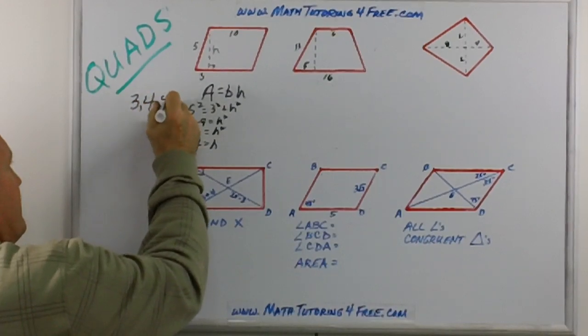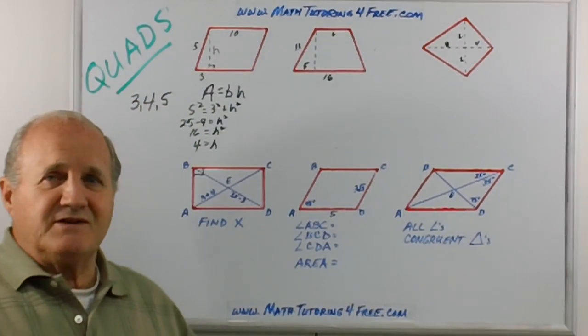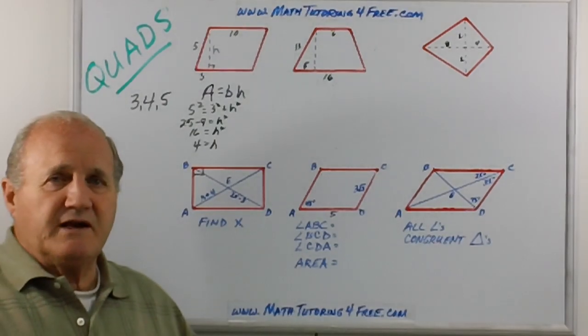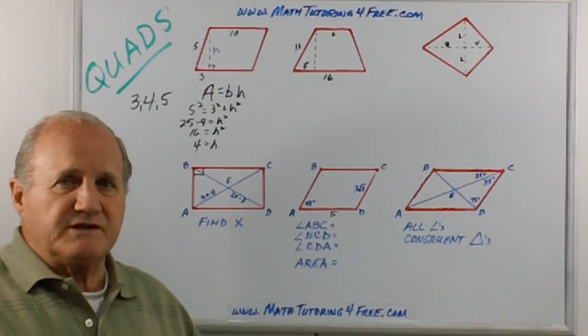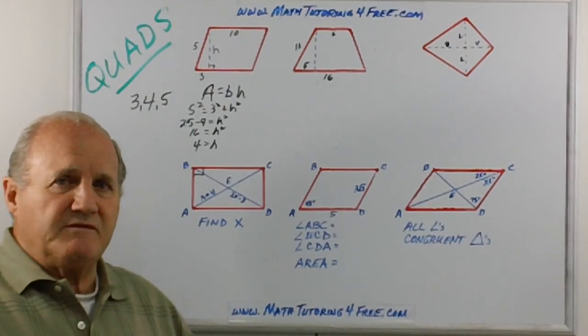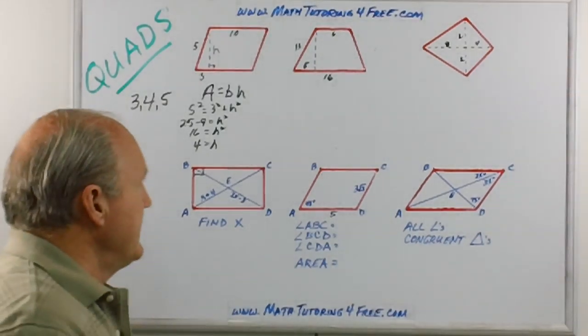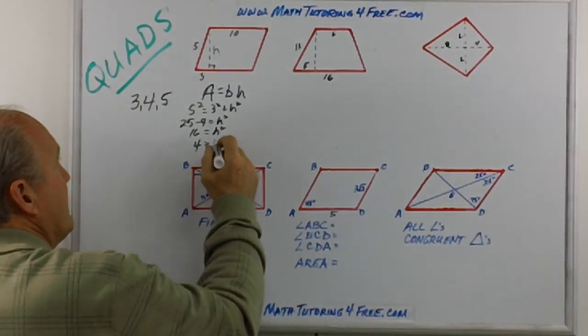Hopefully you saw that right off the bat. 3, 4, 5 right triangle is the most widely used triangle on tests. By now you should look for those things. You see a 3 and a 4, the hypotenuse is 5. You see a 5 and a 3, the other leg is 4.